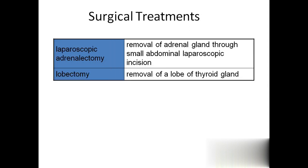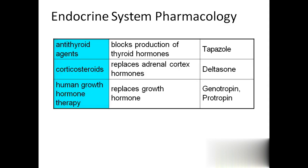Laparoscopic adrenalectomy uses laparoscopic instruments to remove the adrenal gland. Lobectomy involves removing a part of a lobe of the thyroid gland. Coming to pharmacology: antithyroid agents block thyroid hormones. Corticosteroids replace adrenal cortex hormones such as glucocorticoids, mineralocorticoids, and corticosteroid sex hormones - used in hyposecretion conditions like Addison's disease.